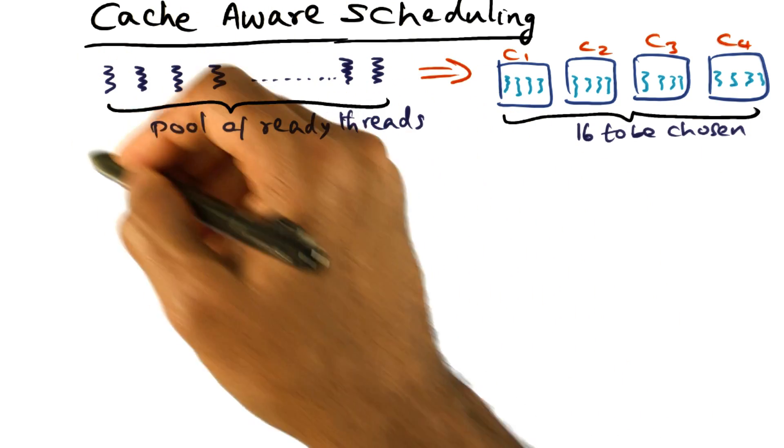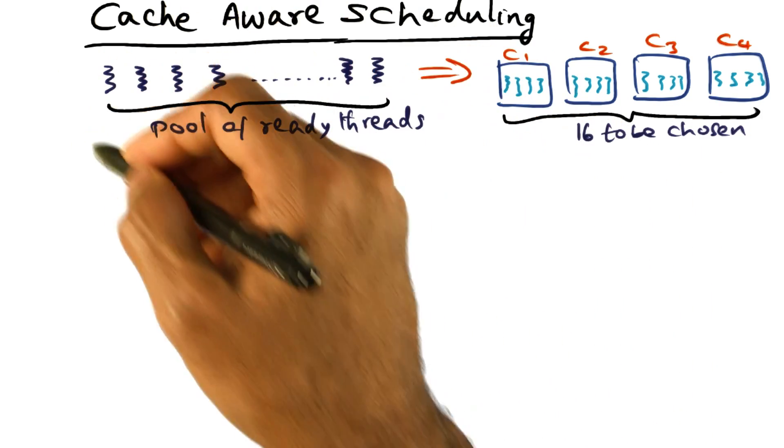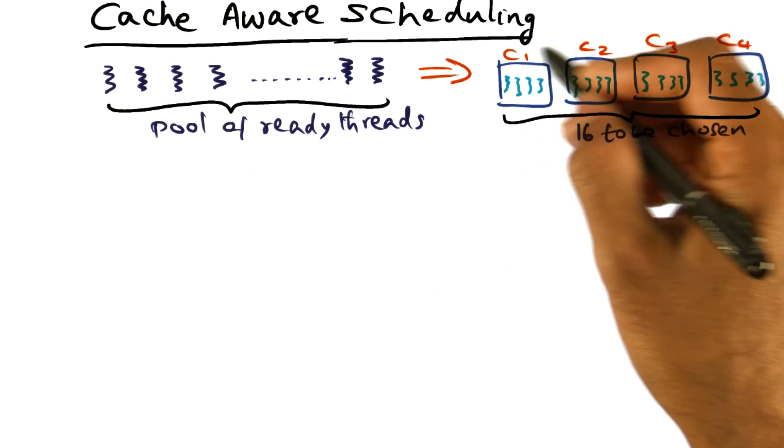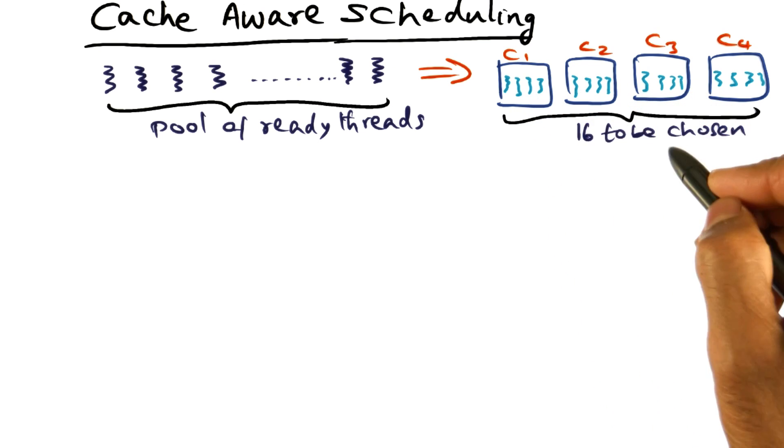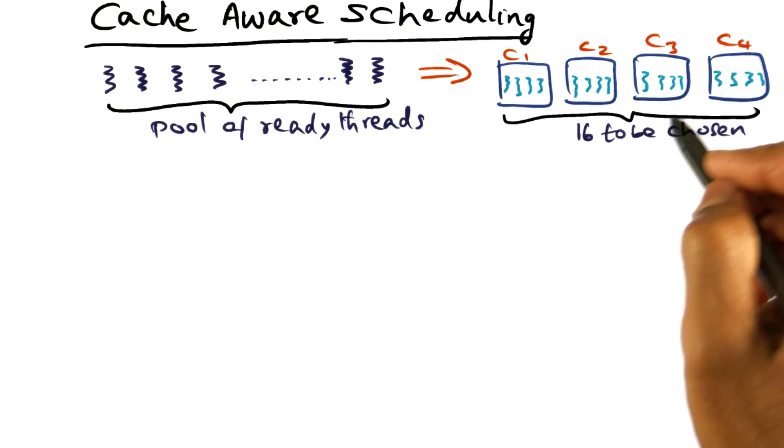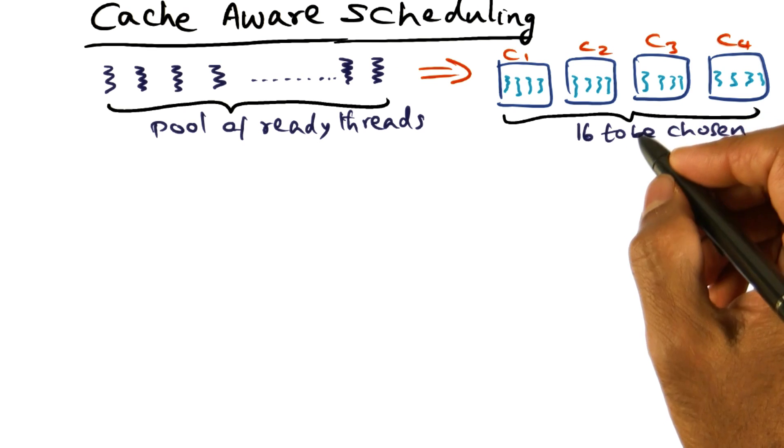The job of the operating system scheduler is to pick from the available pool of ready threads 16 candidates to be scheduled on the CPU. So how does the operating system choose the 16 threads to be run on the CPU at any point of time?